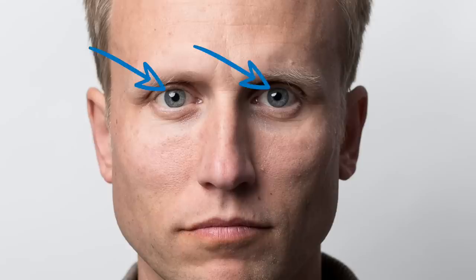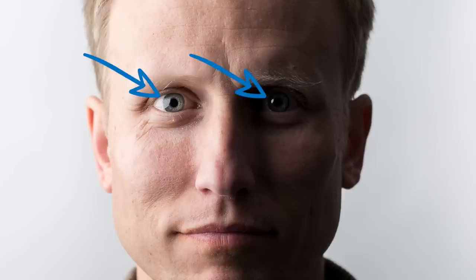Before we move on, remember that as a rule of thumb, a properly lit portrait is one that has good catchlights on the upper third of the subject's eyes. So I'm going to keep that in mind as I move the light around Tobi. Now let's get started.